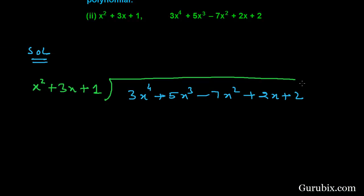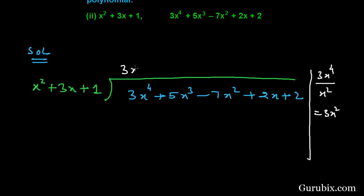To find the first term of the quotient, we shall divide the first term of the dividend, 3x to the 4th power, by the first term of the divisor, x squared. Then we get 3x squared. If we multiply the terms of the divisor by 3x squared, we have 3x to the 4th power plus 9x cubed plus 3x squared.